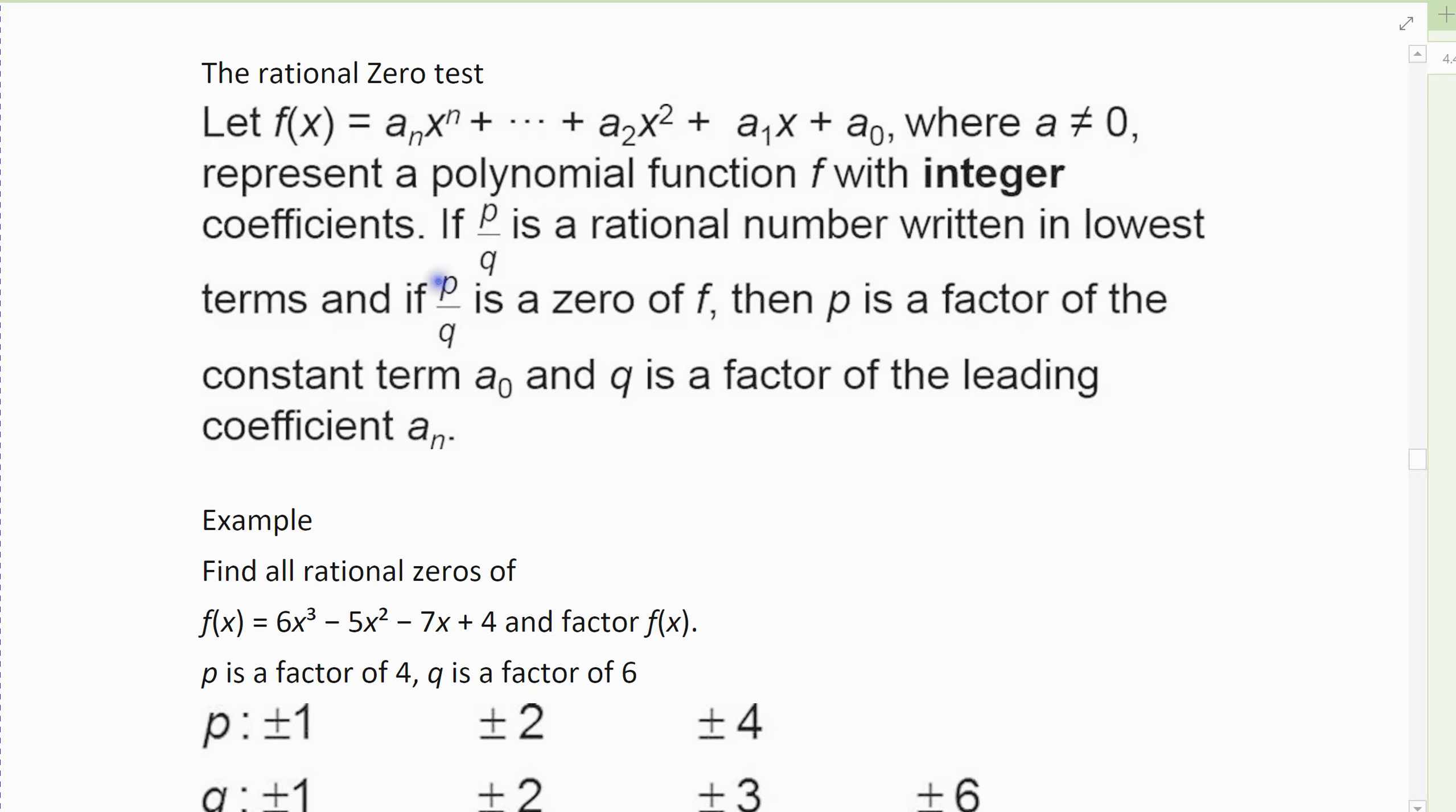And q is a factor of the leading coefficient a_n. And so it's just a fancy way to say, in order for this zero to exist, the fraction comes from the leading term and the constant term. Same idea as the AC method, just a little more complex here. That is the only way to get a rational zero. It has to follow those parameters.